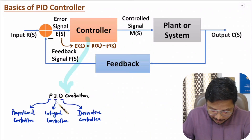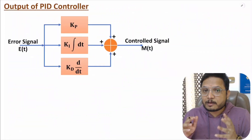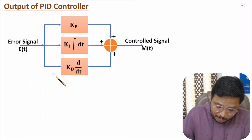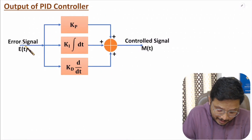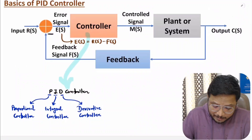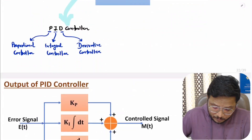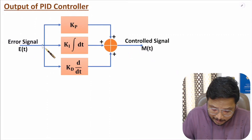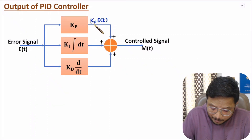PID stands for Proportional, Integral, and Derivative controller. The PID controller is a combination of these three controllers. The input to the PID controller is the error signal E(t). Output of the proportional controller is constant K_P multiplied by input E(t), so output is K_P into E(t).